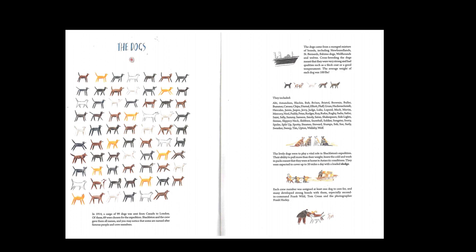And this is the page that I particularly love — the dogs. Why do you think Sir Ernest wanted to take so many dogs aboard his ship? Let's see if we can find out why. In 1914, a cargo of 99 dogs was sent from Canada to London. Of these 99 dogs, 69 of them were chosen for the expedition. Shackleton and the crew gave them all names, and you may notice some are named after famous people and crew members. The dogs came from a mongrel mixture of breeds, including Newfoundlands, St. Bernards, Eskimo dogs, wolfhounds and wolves.